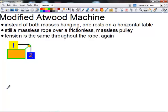Instead of having two objects in the air being hung together, we have one that rests on a table. So in this case, we're going to have block one resting on a table while block two is in the air.